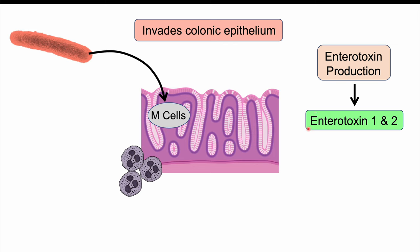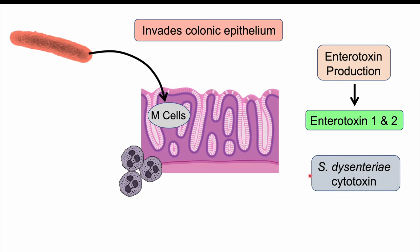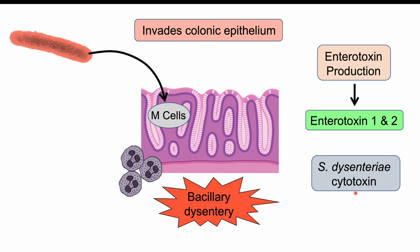The toxins produced include enterotoxin 1 and 2. Shigella dysenteriae can also produce its own cytotoxin, which can cause bleeding. All of this leads to poor nutrient absorption, fluid loss, and bleeding — collectively known as bacillary dysentery.